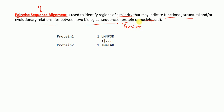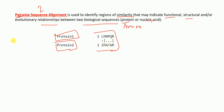In pairwise sequence alignment, we have one sequence from protein 1 and the other from protein 2, and the results of sequence alignment are shown. We have either two amino acid sequences from two proteins, or two nucleotide base sequences like A, T, G, C. There can be only two different sequences, not more than two. This is pairwise sequence alignment.